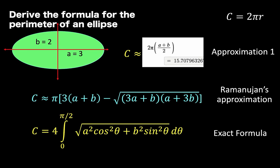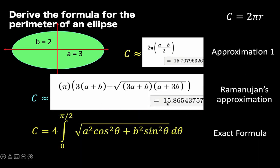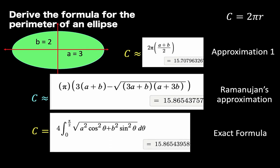Now, using Ramanujan's approximation, here's the result: 15.86543757. There is only a difference of 0.15. The exact value using the calculus formula is 15.86543958. Notice that for the first five decimal digits after the decimal point, Ramanujan's and the calculus formula gave us the same result — the difference starts on the sixth decimal place. Reflecting on this result, I cannot help but admire the genius of Ramanujan.